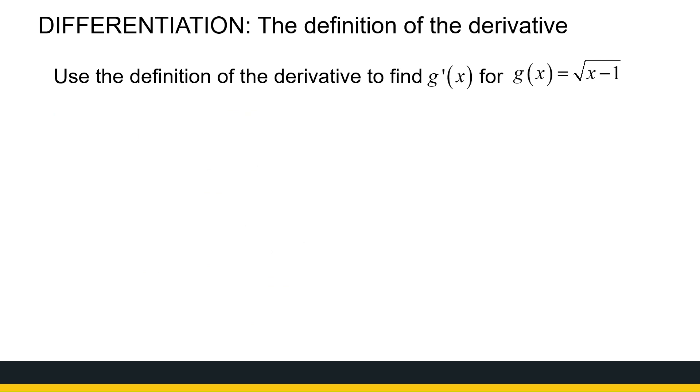Let's look at the next example. Now we've got a root function. How do we deal with them? The derivative of g is the limit as h approaches 0 of g of x plus h, so it's the root of x plus h minus 1 minus g of x. So minus the root of x minus 1, everything over h.